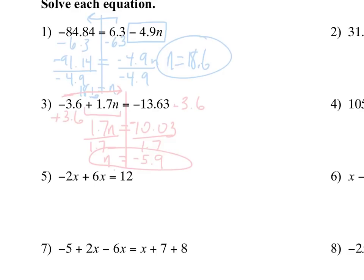Number 5 — I've got two variables. These are like terms, so we're going to combine them as they are. Remember, if we're not going across the brick wall, we just combine like terms by whatever the signs say. In this case, it's negative 2 plus 6. That's how many x's we're left with. Negative 2 plus 6 is just 4x. We didn't do anything with 12 — now divide by 4, divide by 4, x equals 3. We didn't do anything different on 5 that we didn't do on 1 and 3. We just had cleaner, nicer numbers.